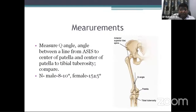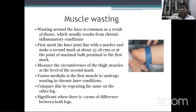Now measurement. Measure the Q angle — the angle between a line from the anterior superior iliac spine to the center of the patella, and from the center of the patella to the tibial tuberosity. Compare with the other side. Normally in males it is 8 to 10 degrees and in females it is 15 plus or minus 5 degrees, meaning 10 to 20 degrees. Now measure for muscle wasting: mark the joint line and a point 15 to 18 centimeters above it on both sides, measure with a tape and compare. Any difference of more than 2 centimeters is significant. Muscle wasting is seen in chronic illness.